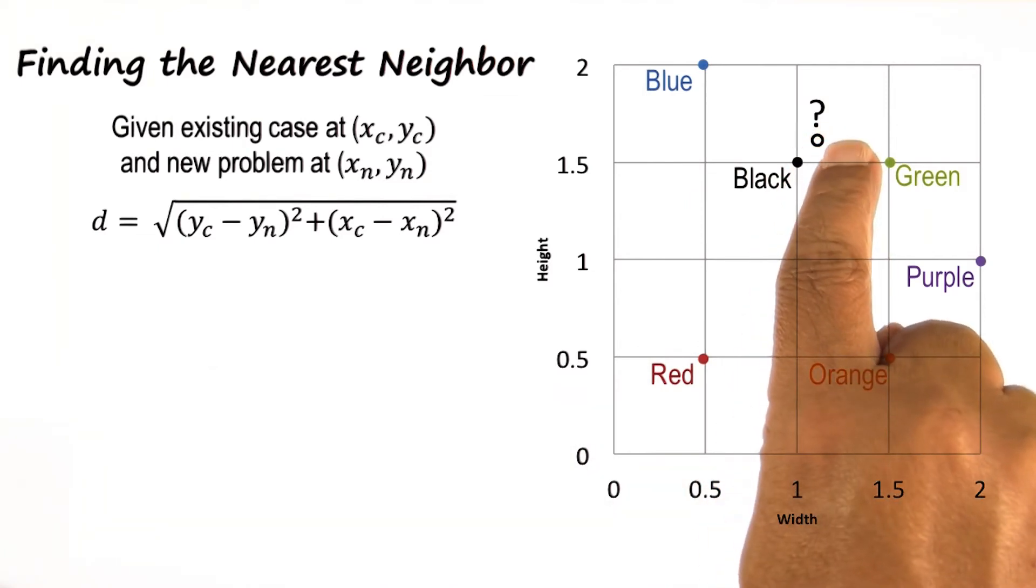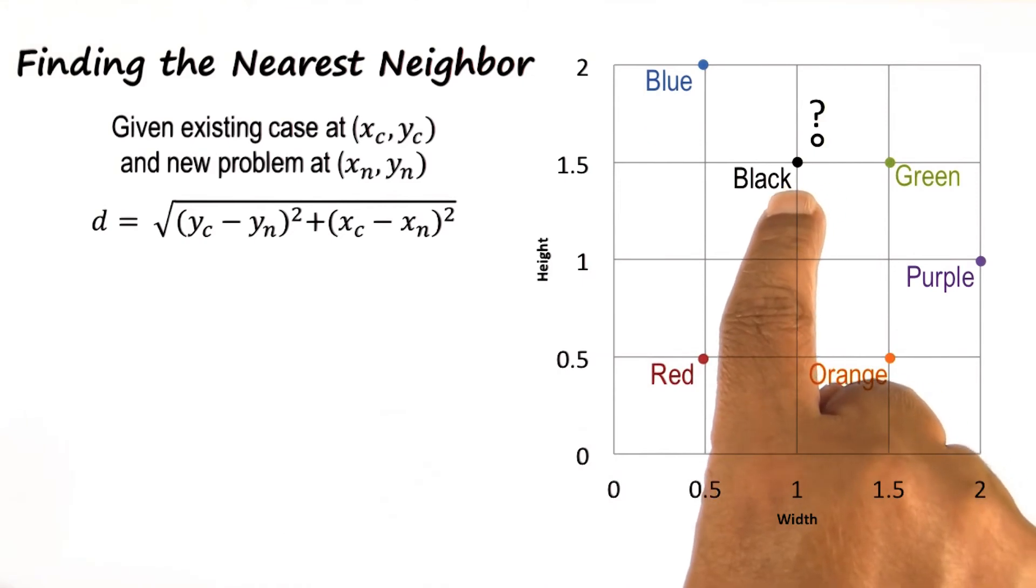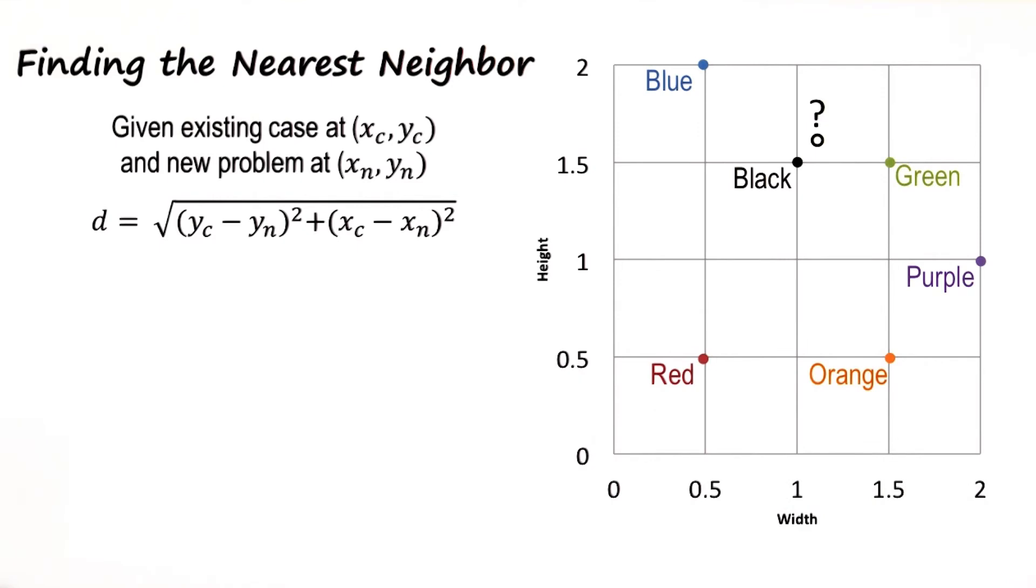Once we have calculated the distance between the new problem and each of the previous cases, we can simply select the case which is closest to the new problem. This method is called the nearest neighbor method.